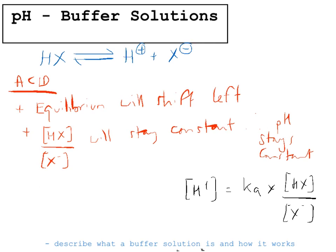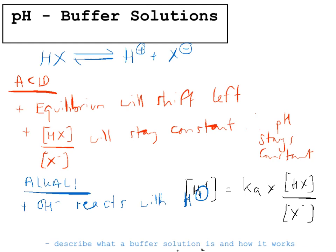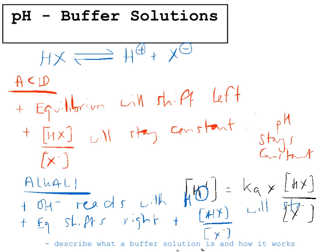Now thinking about alkalis: if we add an alkali to the buffer solution, we're adding OH⁻. The OH⁻ will react with H⁺ first, removing it from solution. The equilibrium will therefore shift to the right to replace the lost H⁺. As a result, the ratio HX over X⁻ stays constant, and therefore the pH stays constant for the same reason as with the acids.